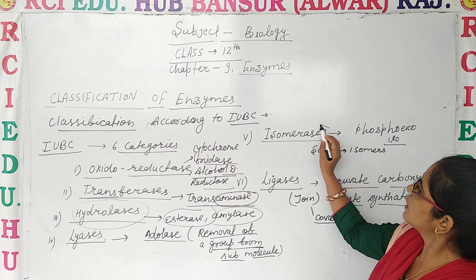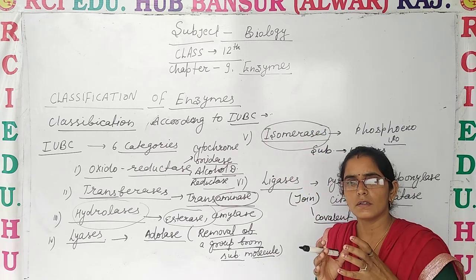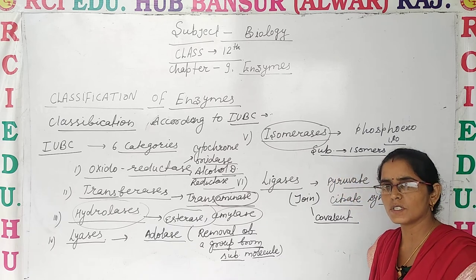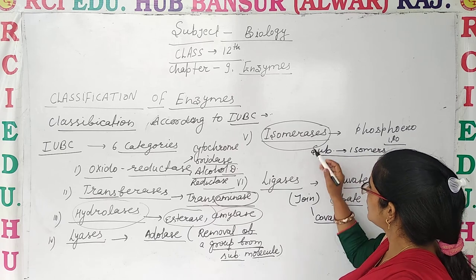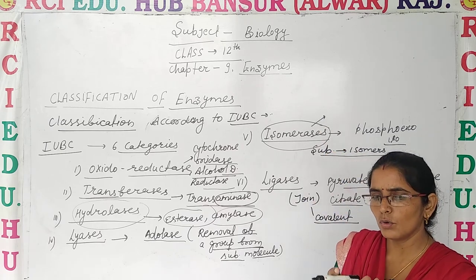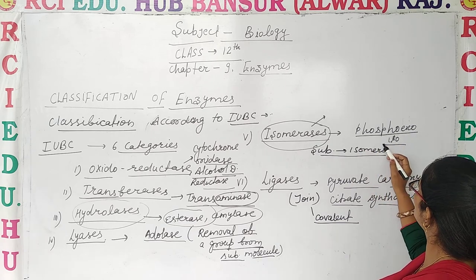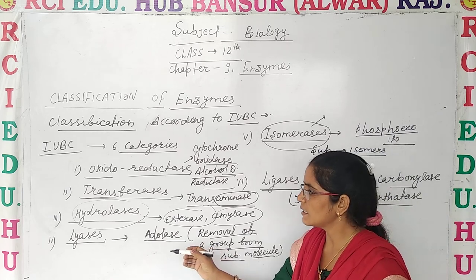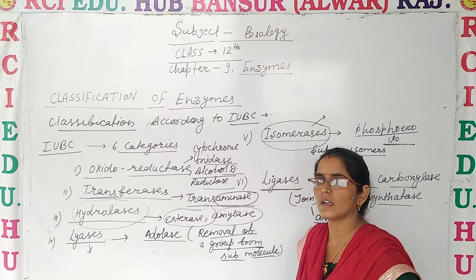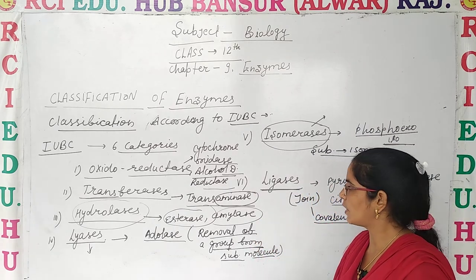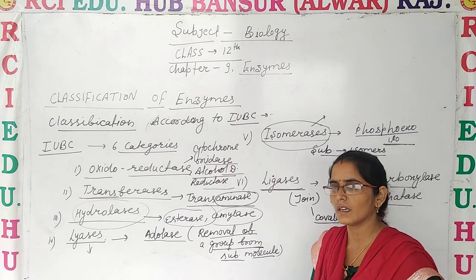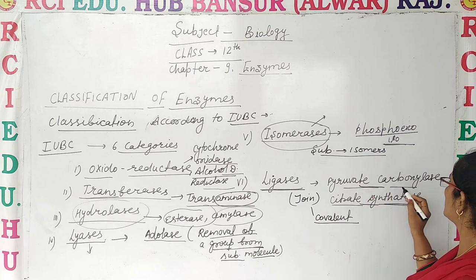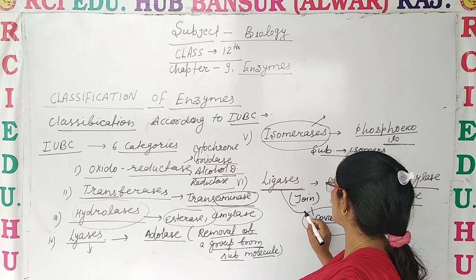The fifth category is Isomerases. In isomerases, the structural formula changes but the molecular formula remains the same — the substrate isomer is changed. Enzymes that catalyze these changes are known as Isomerases; an example is phosphoglucose isomerase. The sixth and last class is Ligases. Ligases join two groups together through covalent bond formation, which is the opposite of Lyases. Examples include citrate synthetase and pyruvate carboxylase.